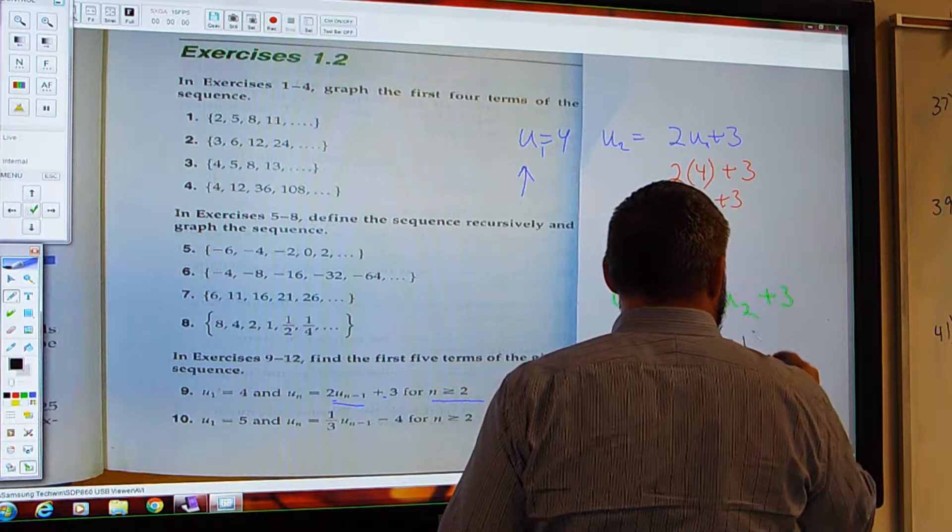We said it was 2 times 11 plus 3. So 22 plus 3. 25. It's 25.